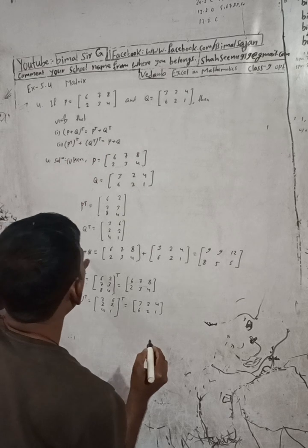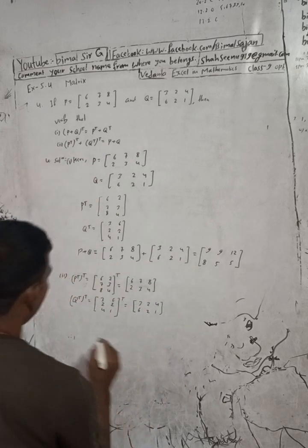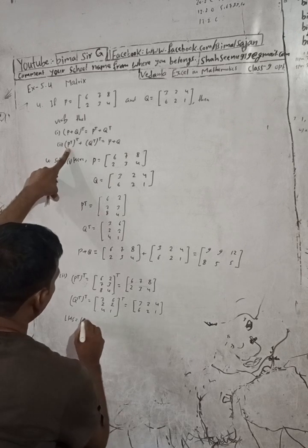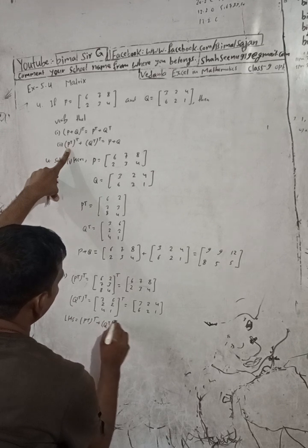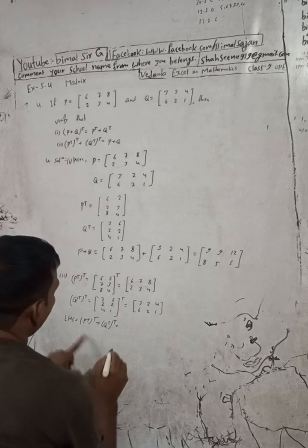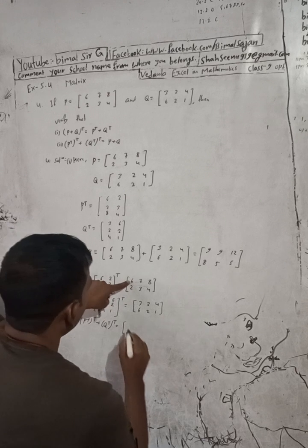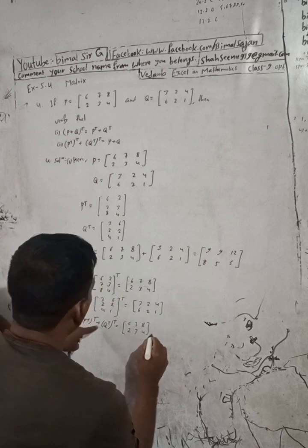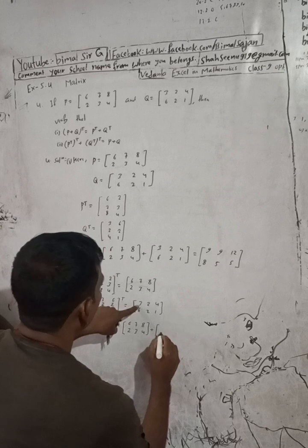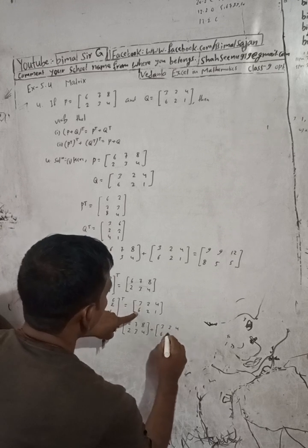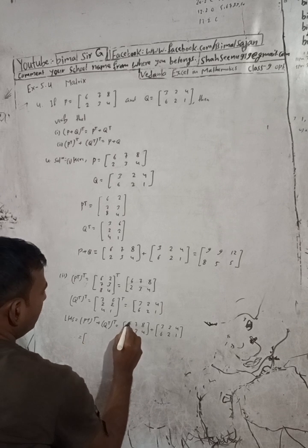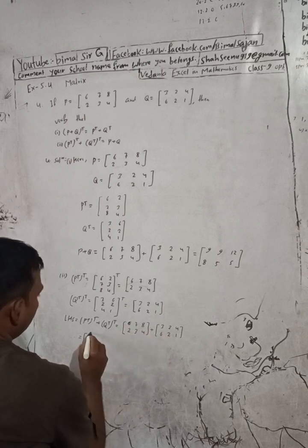We got the separate results. Now writing LHS: LHS is (P^T)^T plus (Q^T)^T. P^T transpose gives back [6 7 8 / 2 3 4] plus Q^T transpose gives back [3 2 4 / 6 2 1]. That is, 6+3=9, and continuing the addition.